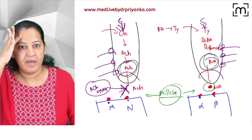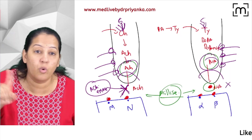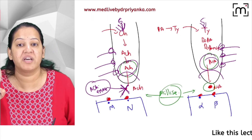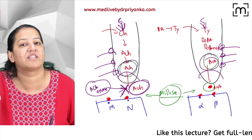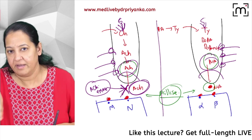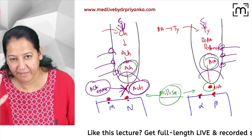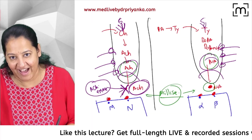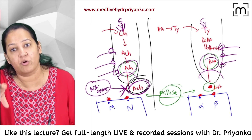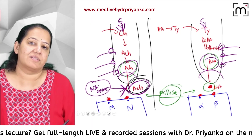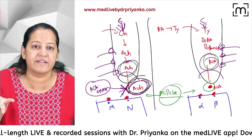In the cholinergic system, there is no destruction on the adrenergic side. The termination of action of acetylcholine is due to its destruction — hydrolysis by the enzyme cholinesterase. On the adrenergic side, no such destruction takes place.